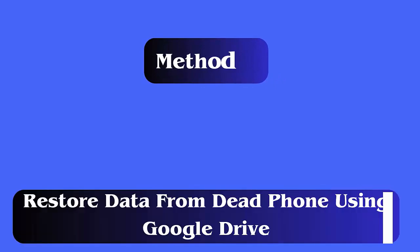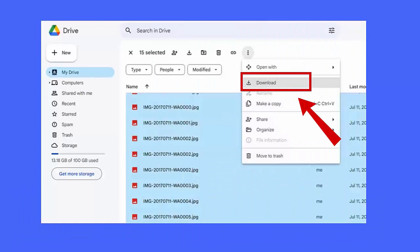Method 1: Restore data from dead phone using Google Drive. Follow the steps. First, open the Google Drive app and tap on the My Drive option. Now, tap on the data you want to restore, like photos, videos, notes, etc., and then click on the Download option.